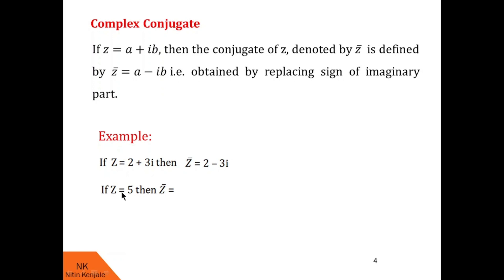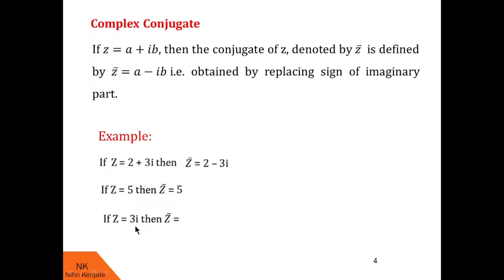Similarly, if z is equal to 5, where the imaginary part is 0, then its conjugate z-bar is simply 5. Now consider another example where the real part is 0. Here z is equal to 3i. Its conjugate is obtained by replacing the sign of the imaginary part, so z-bar is minus 3i.